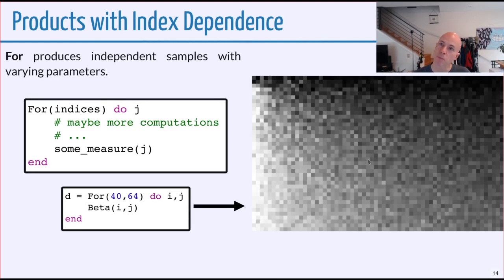In a lot of cases, we don't want independence. We want conditional independence, but we want there to be some dependence on the index. This is a really common way to set things up. In this case, we have this for combinator. We say for, given the indices, and then typically we'll use this using the do notation in Julia. For a given j, this is the index, we have whatever measure you like. Here's an example. For 40, 64, do ij, beta ij. You can see even though these are independent, the measure does depend on the pair of indices that you take. You can see the trend as we go across the matrix in this case.